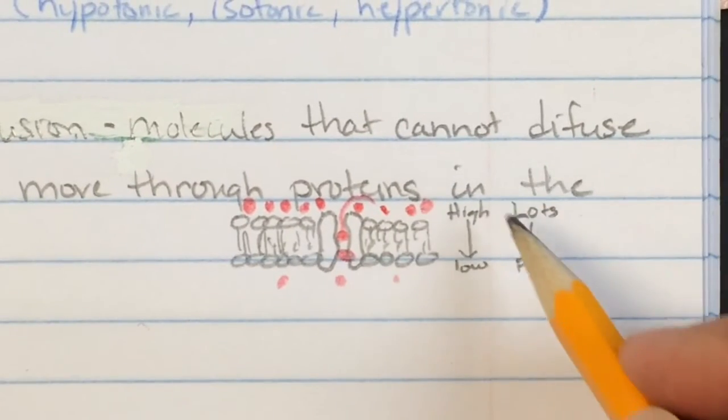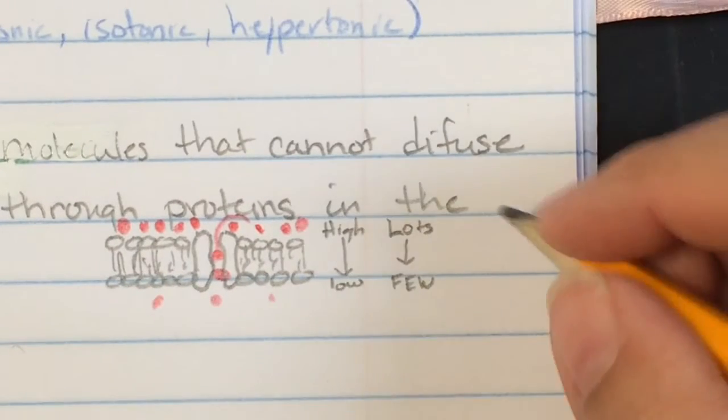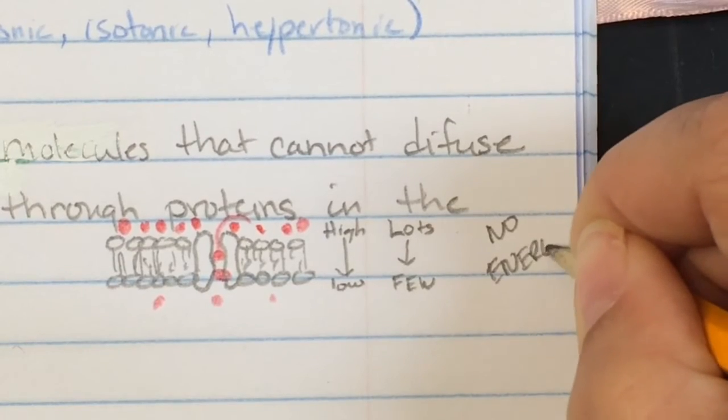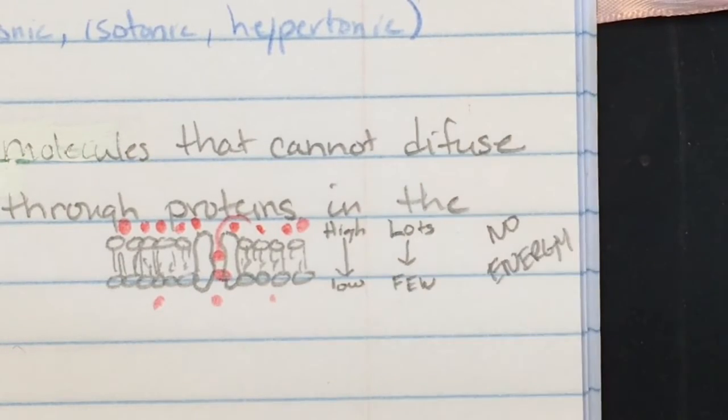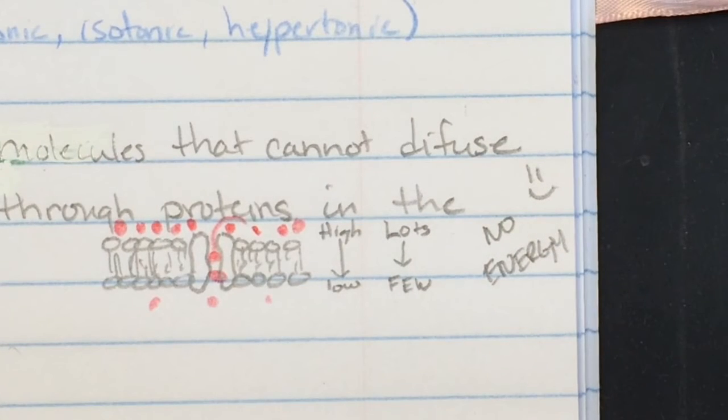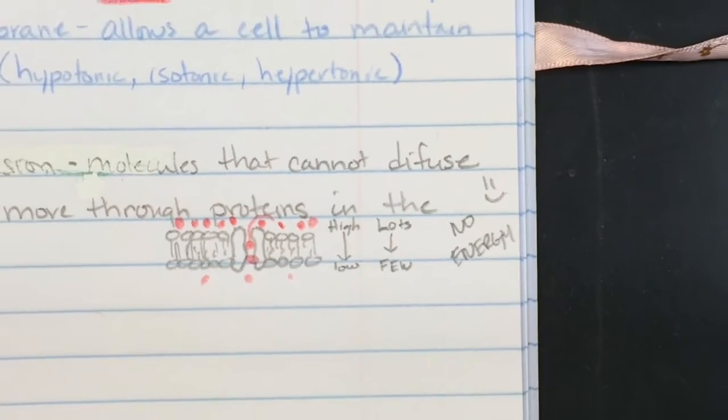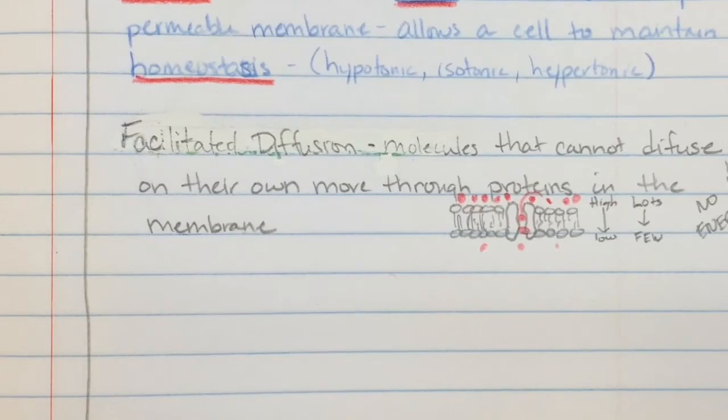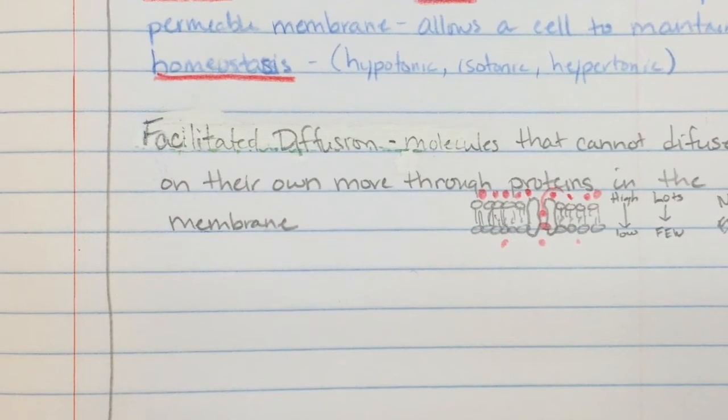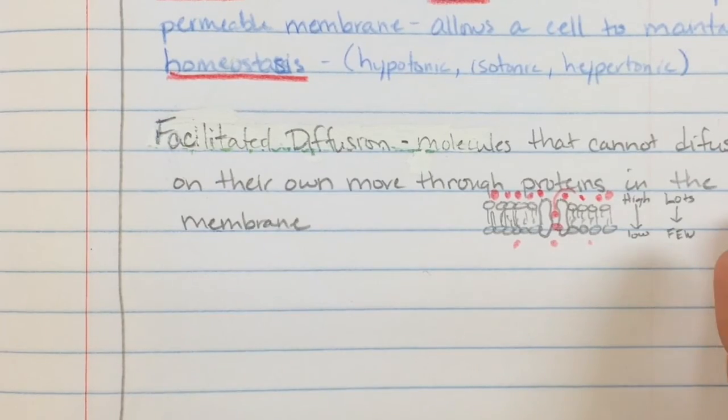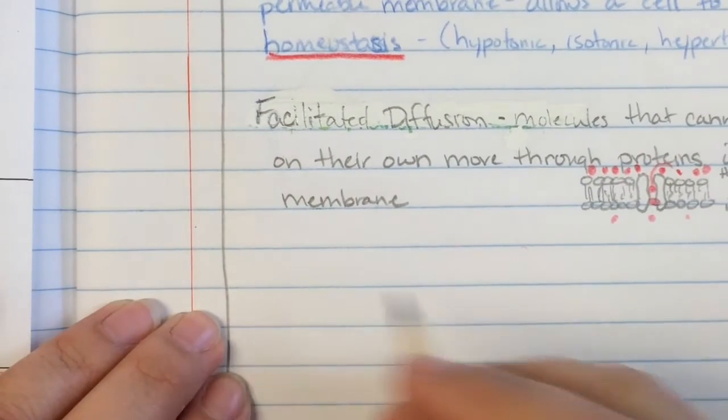So this is facilitated diffusion and the cool thing about it is that since they're going from high concentration to low concentration it requires no energy. It's free, yay! So super super easy for it to move through there because it doesn't require anything extra. Now every now and then cells need to pump some stuff across the membrane and so this requires some energy to happen and we, there goes a pencil sorry, and so we call this active transport.